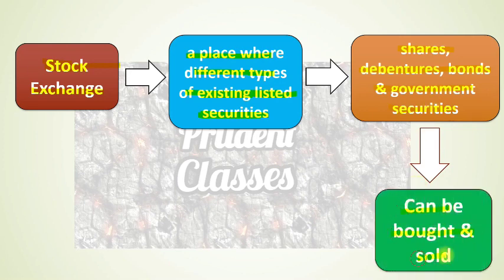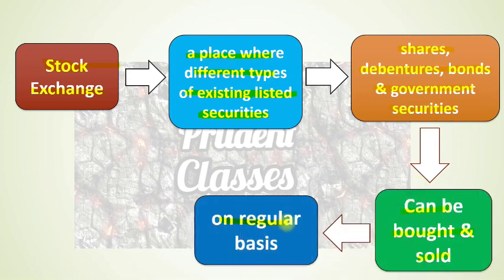These existing listed securities can be bought and sold on a regular basis. That place is called a stock exchange. I repeat: a stock exchange is a place where different types of existing listed securities such as shares, debentures, bonds, and government securities can be bought and sold on a regular basis.